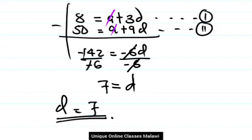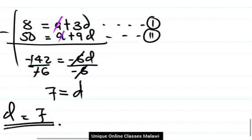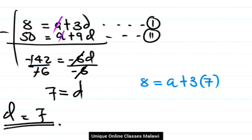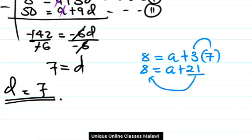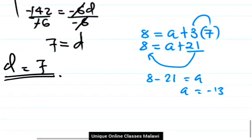Now to find the value of a, we take one of the equations and substitute. I'll take equation number 1. So we have 8 equals a plus 3d. We found that d is 7, so we can put it there. 8 equals a plus 3 times 7, which is a plus 21. We need to find the value of a, so we take this 21 to the left hand side. It will be 8 minus 21 equals a. Therefore, the value of a equals negative 13.